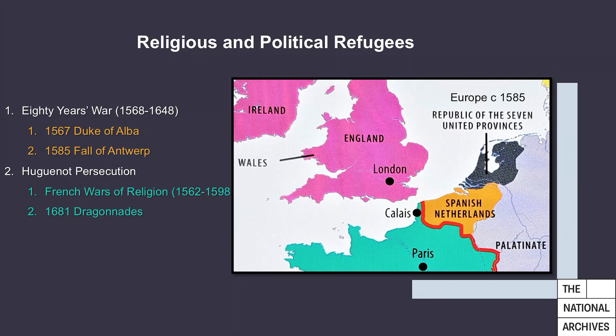The two key religious and political causes of migration to England in the early modern period were the persecution of non-Catholics as part of the Dutch Revolt in the 16th century, and the persecution of Huguenot Protestants in France, which continued throughout the early modern period, hitting its peak in the 1680s. The Dutch Revolt, begun in the 1560s, was a religious political clash between the native Dutch and their Spanish rulers. At its end, the Low Countries were divided, with the Spanish-controlled Netherlands to the south, and the Republic of the Seven United Provinces, which would become the Netherlands that we know today, to the north.